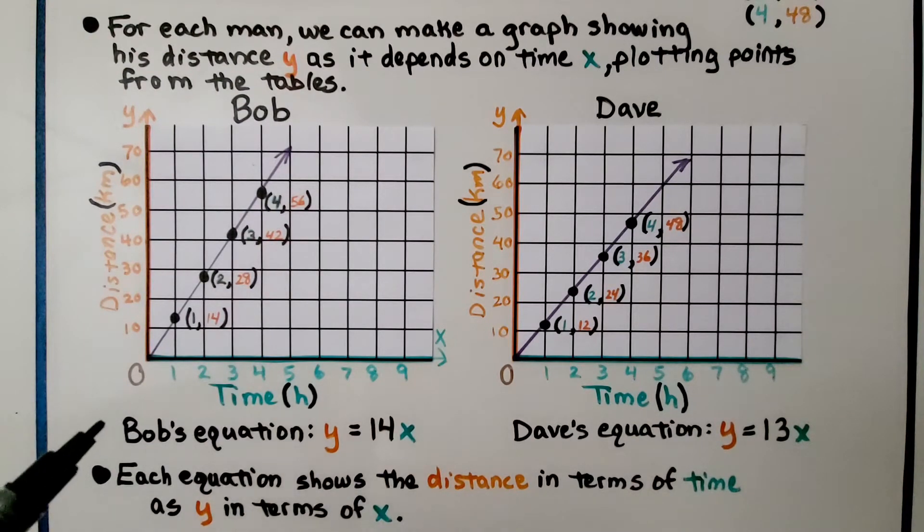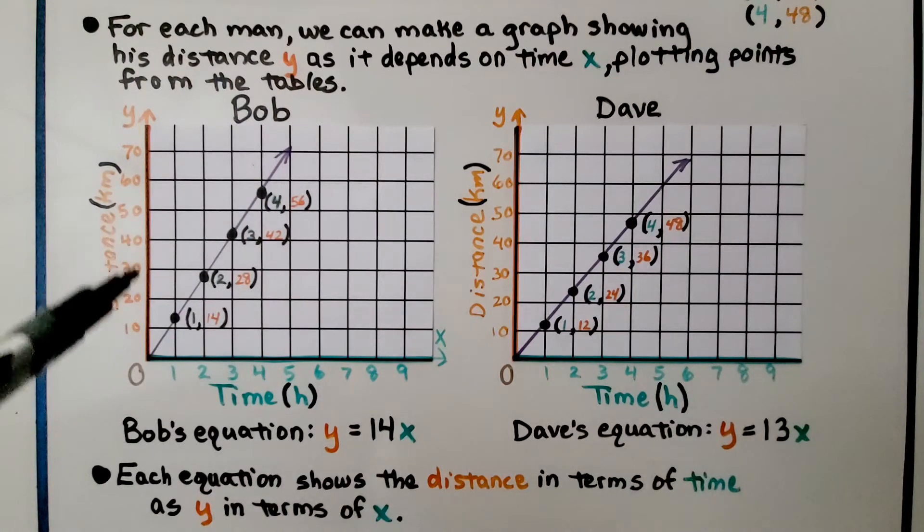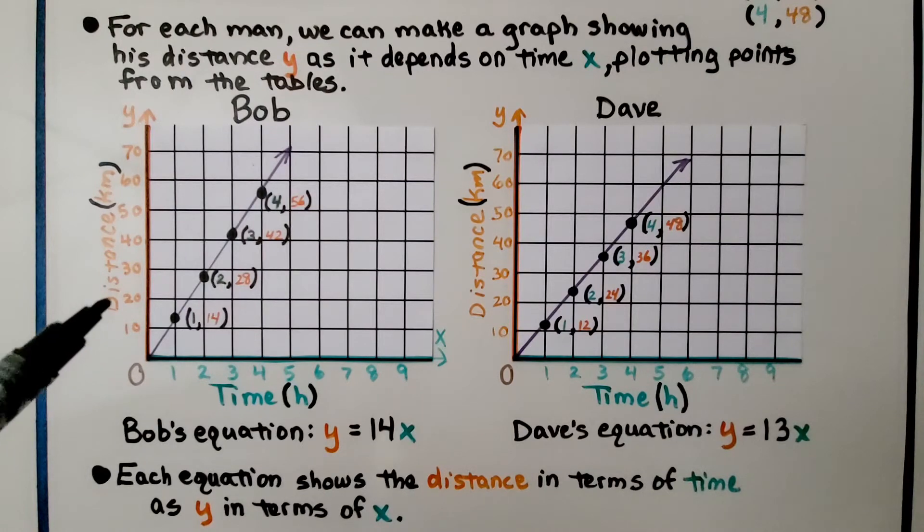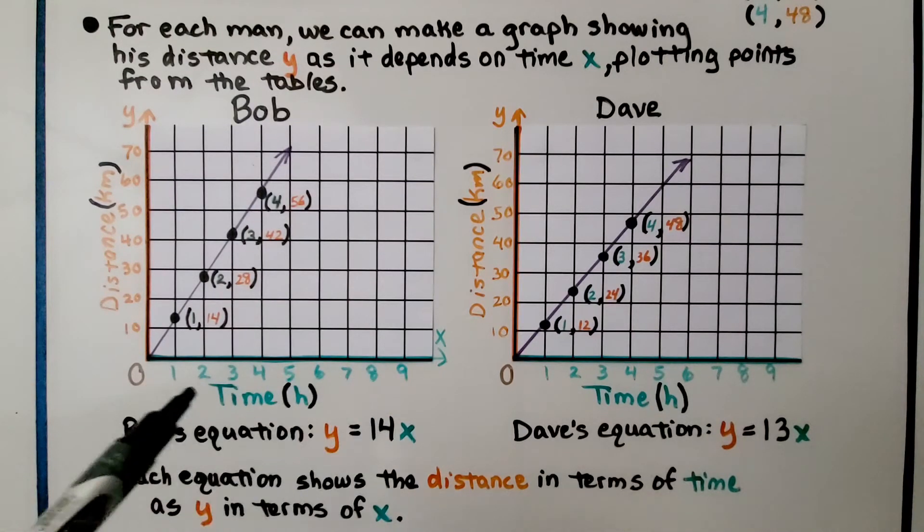And Bob's equation is y, whatever this value on this scale for distance is, is equal to 14 times whatever the hour is.